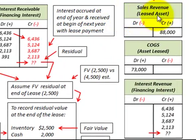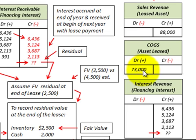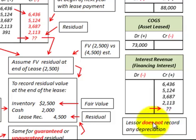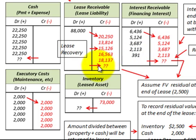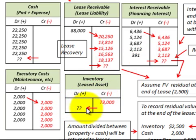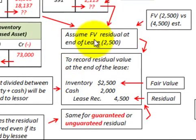Sales revenue is credited for $88,000 — the capitalized amount based on the guaranteed residual value. Cost of goods sold is debited for $73,000, and interest revenue is credited for each lease payment received. Importantly, the lessor does not record any depreciation. We also need to address how to handle the residual value at the end of the lease — accounting for cash, the lease receivable, interest receivable, and inventory.